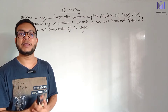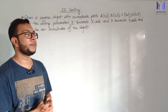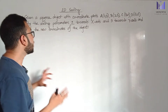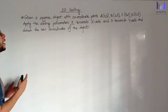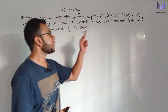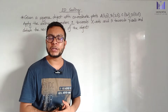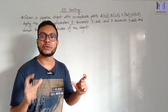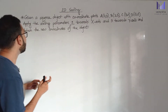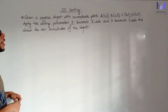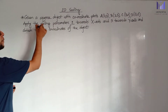I am going to discuss a question about a given square object with coordinate points A, B, C, D. We need to apply a scaling parameter to this square object and perform the scaling operation.